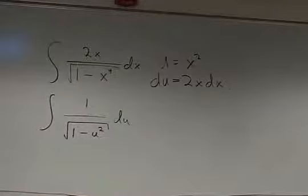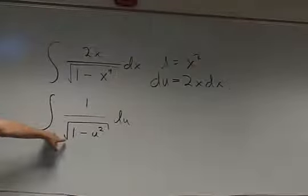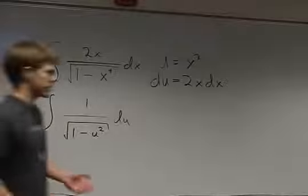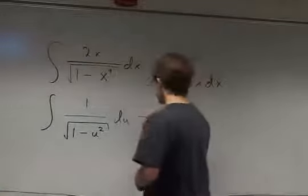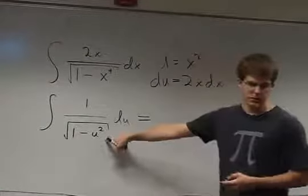And then all we have to do is realize that 1 over the square root of 1 minus u squared is the arcsine. So it is the derivative of arcsine.